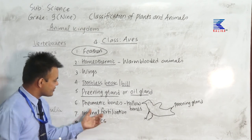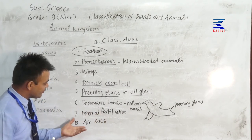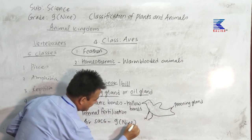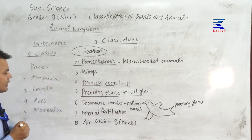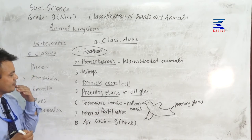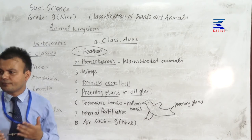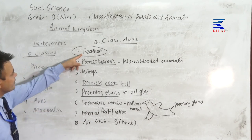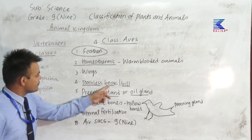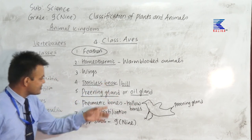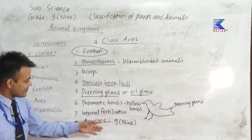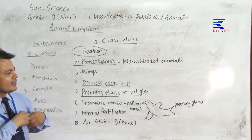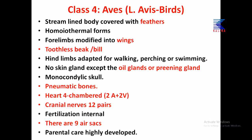Fertilization is internal. They have air sacs, also known as airbags — altogether nine air sacs — which help for the aerial mode of life and assist in flight. So the major characteristics are: feathers, homeothermic, wings, toothless beak or bill, preening gland or uropygial gland, pneumatic bones or hollow bones, internal fertilization, and air sacs. These are the major characteristics of birds.